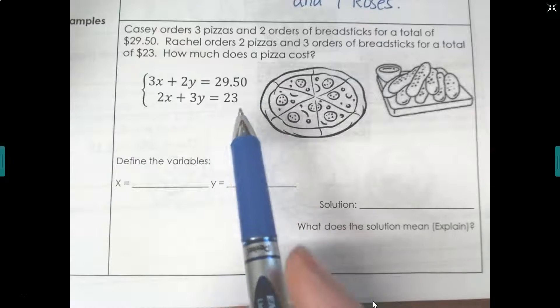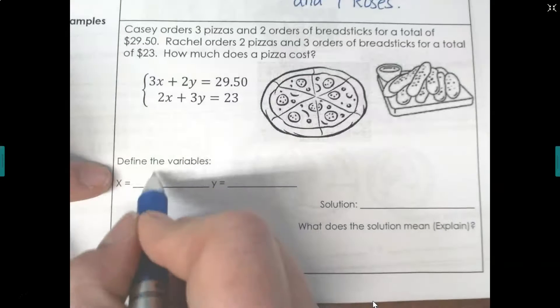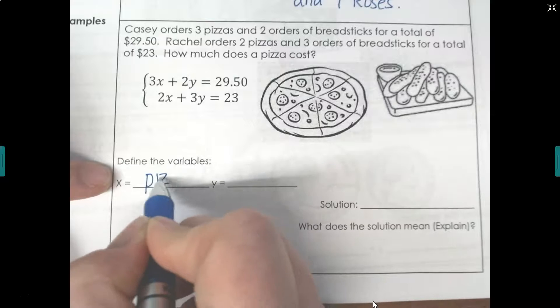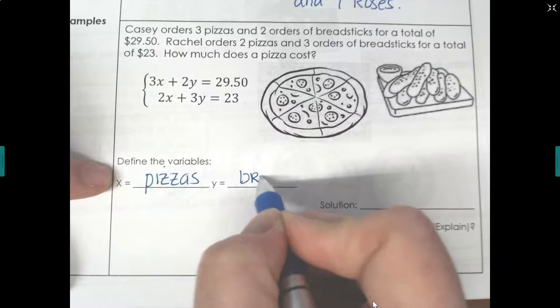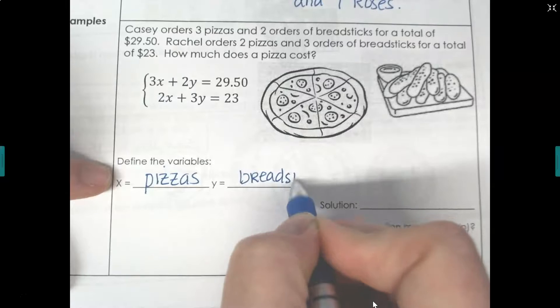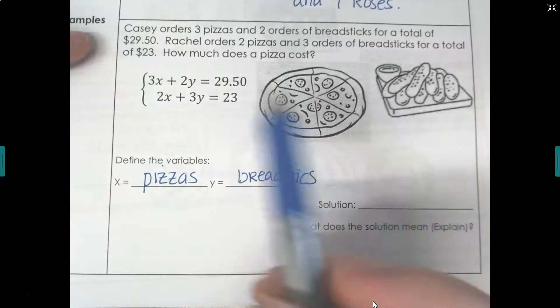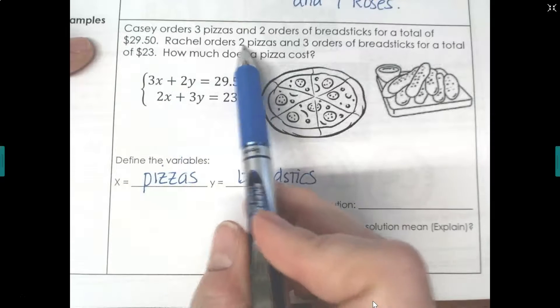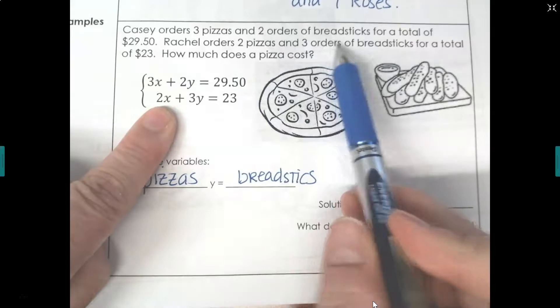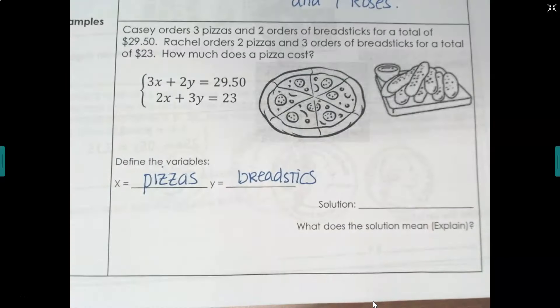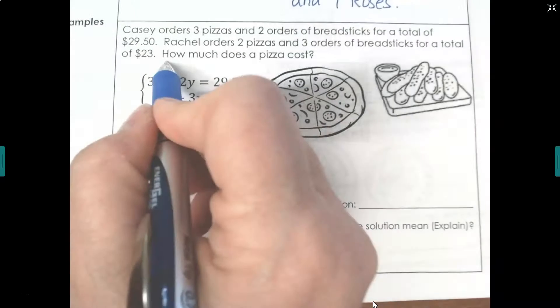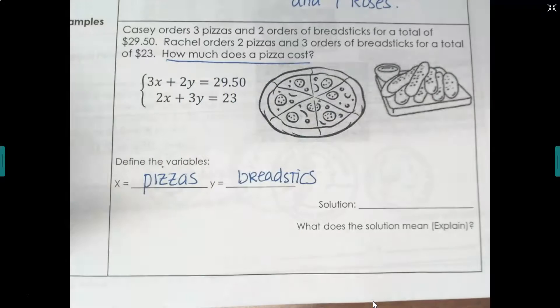The sentence is the equation. So that means the x represented the pizzas and the y's are the breadsticks. So the second sentence says we have two pizzas and three breadsticks for $23. Then I want to know how much does each pizza cost? So when I go to answer the question, I'm only really answering about the pizza.